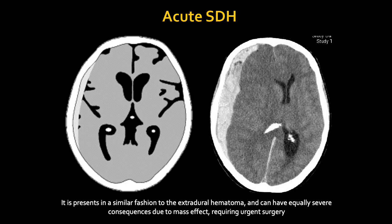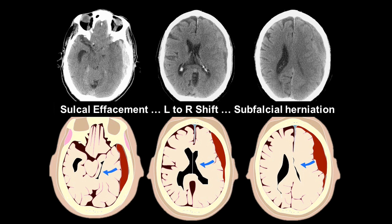In an acute subdural hematoma we see a density between 45 to 60 Hounsfield units. There is a large intracranial shift because the falx cerebri has shifted, and there is also collapse of the right occipital horn of the lateral ventricle — this patient will need urgent surgical intervention. With decompression over time you can see sulcal effacement, shifting from right to left, and subfalcine herniation, where tissue in the temporal area drops below the falx cerebri and pushes to the opposite side.